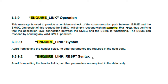Let's start today's topic. What is enquire link in SMPP? Basically, enquire link is used to ping and check the stability of the connection. This message is used to provide a confidence check of the communication path between the ESME and the SMSC. If a TCP connection is established between ESME and SMSC, by sending an enquire link request and verifying the response, both nodes can confirm they are up and running.